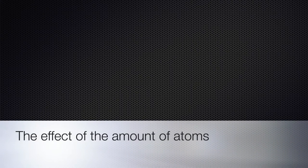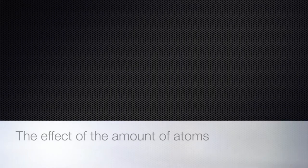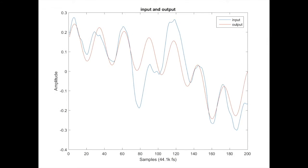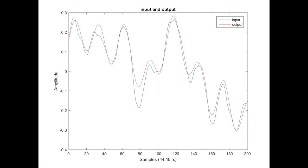The effect of the amount of atoms. The more atoms, or iterations, the better approximation we will get. Here we see 200 samples going from one atom to 100 atoms.